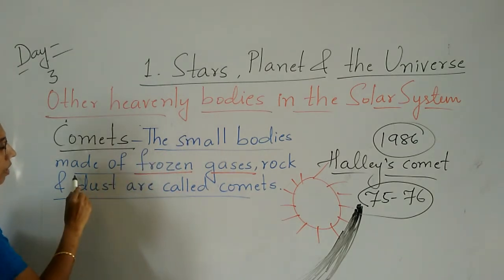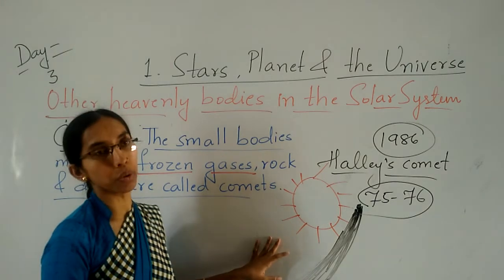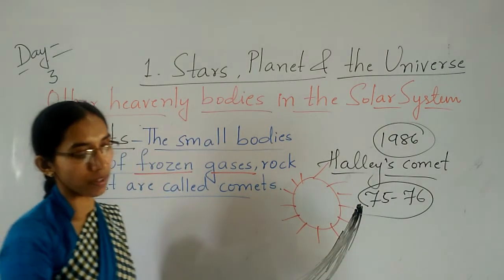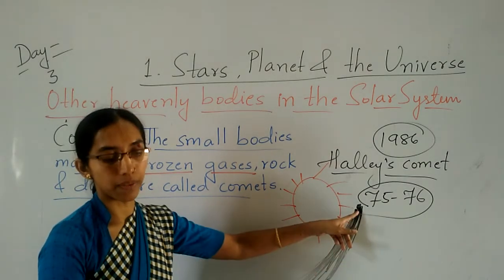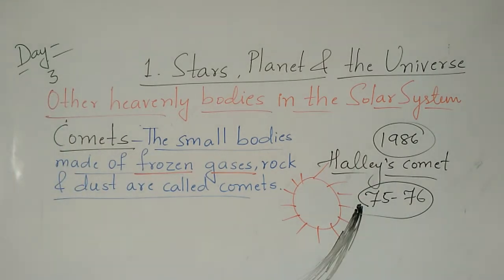The small body made of frozen gases, rocks, and dust — that is the comet. When this comet comes closer to the sun, the heat of the sun causes the gases to start releasing. The gases form a tail that points in the direction away from the sun. Here you can see the comet.